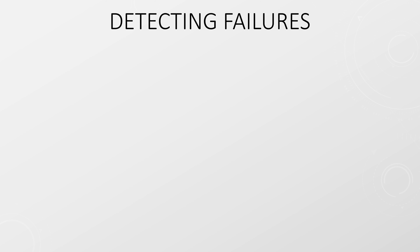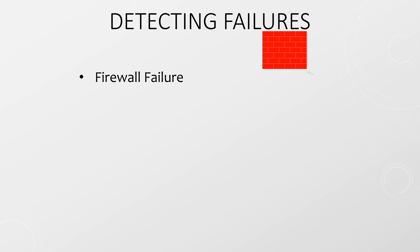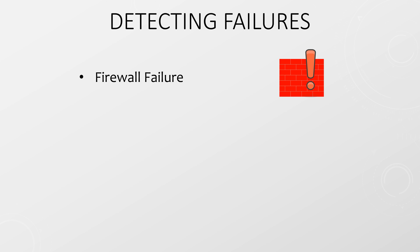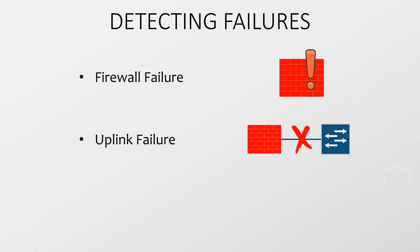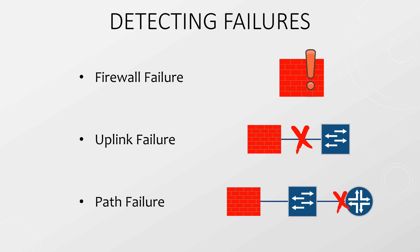The point of HA is to protect against failures. We can group failures into three categories. The first is a firewall failure, where one of the firewalls stops working for some reason. The second is an uplink failure, where a link connected to the firewall goes down. The third is a path failure, where something upstream of the firewall fails. There is also the scenario where an administrator manually causes a failover, perhaps to install an update — we'll look at that in the next video.